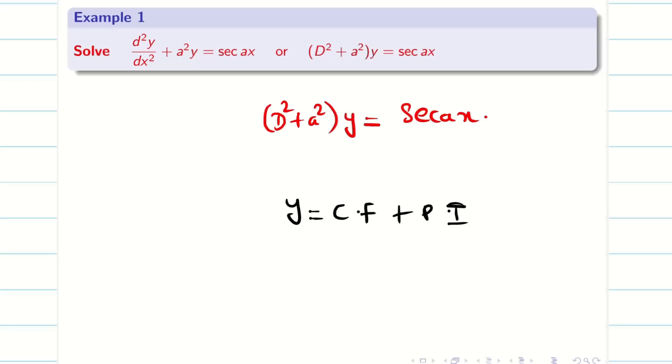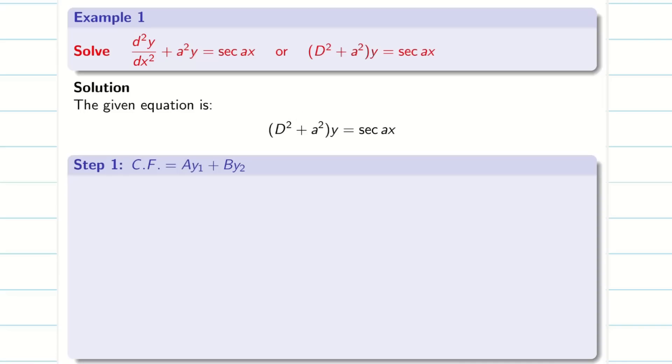We know the general solution y is equal to CF plus PI. So, let us remember the steps which we did in our basics video. We'll do one by one. Let us write the question and my step 1 is finding CF. In particular, finding y₁ and y₂. Now, to find the CF, make the RHS 0.